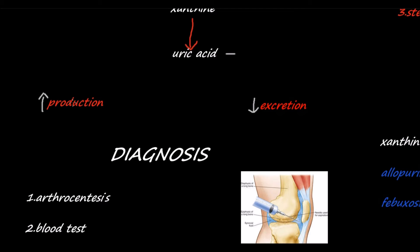Increased production is caused by either increased intake — like increased consumption of meat — or increased degradation of DNA and RNA, as in radiotherapy or leukemia. Alcohol decreases the filtration of uric acid because the breakdown products of alcohol compete with uric acid in the kidney.